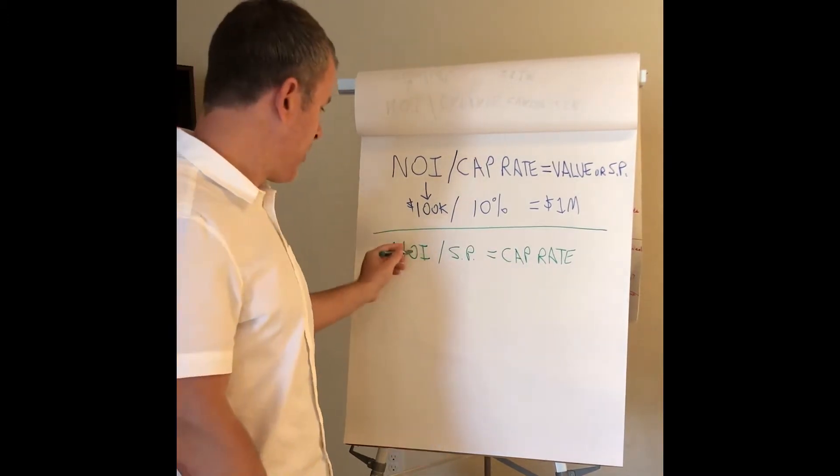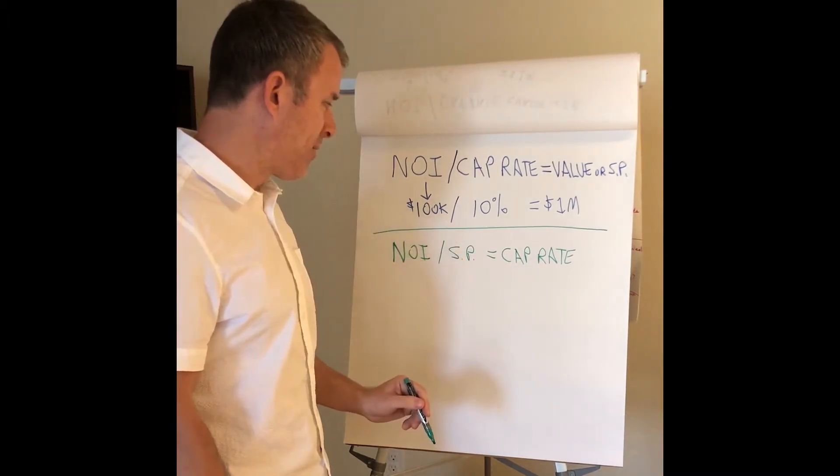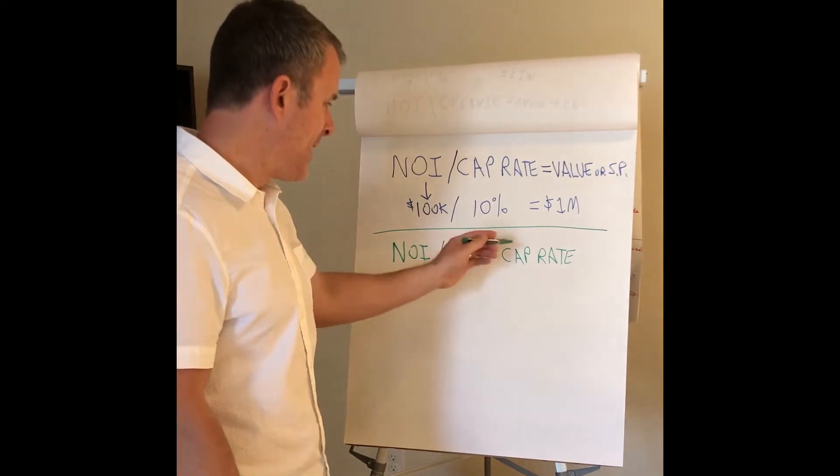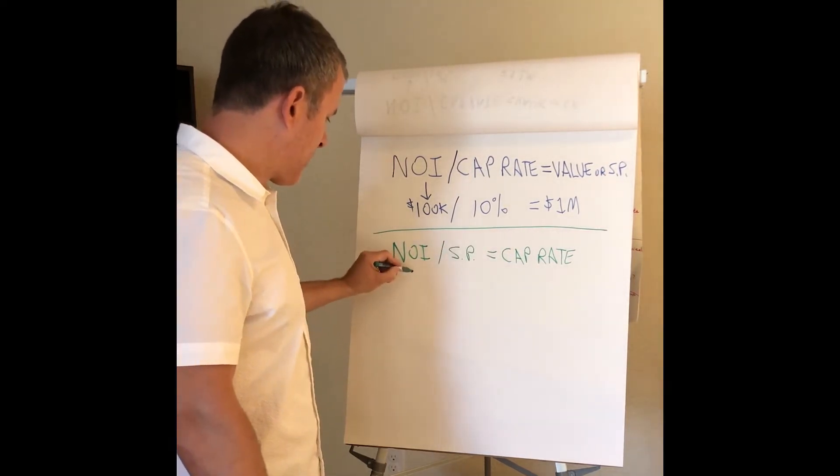So typically when you buy a property, you know the NOI, you know the selling price from the broker, it's in the offering memorandum or you get it from the broker, and you calculate the cap rate. So we'll use an example here.